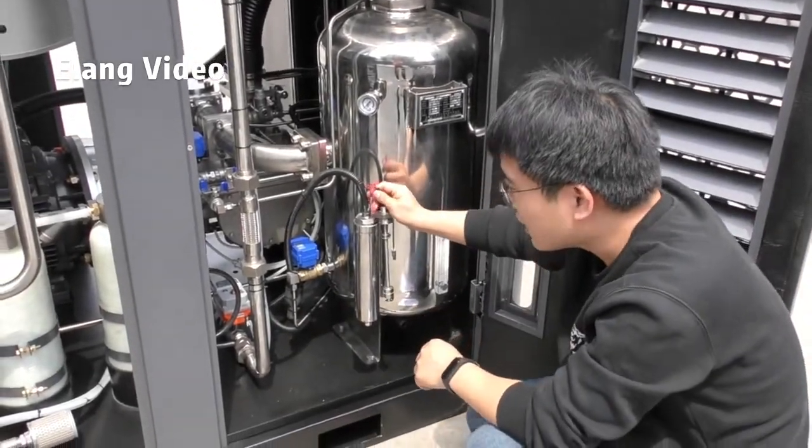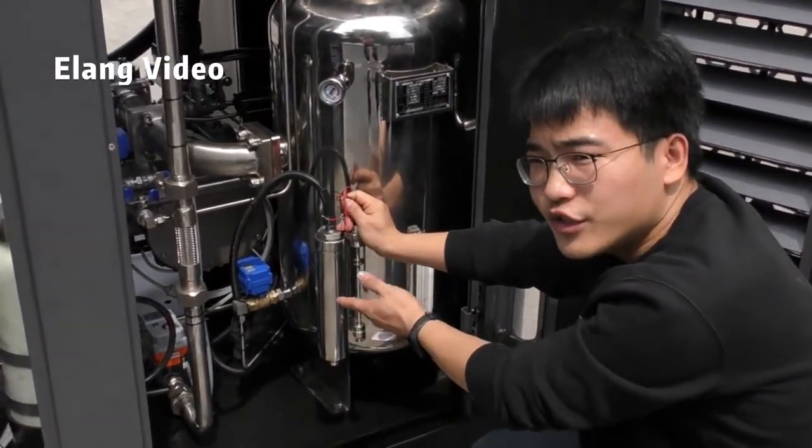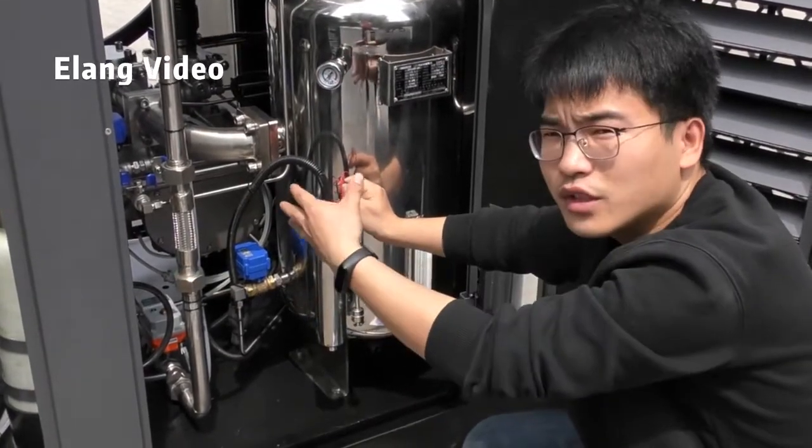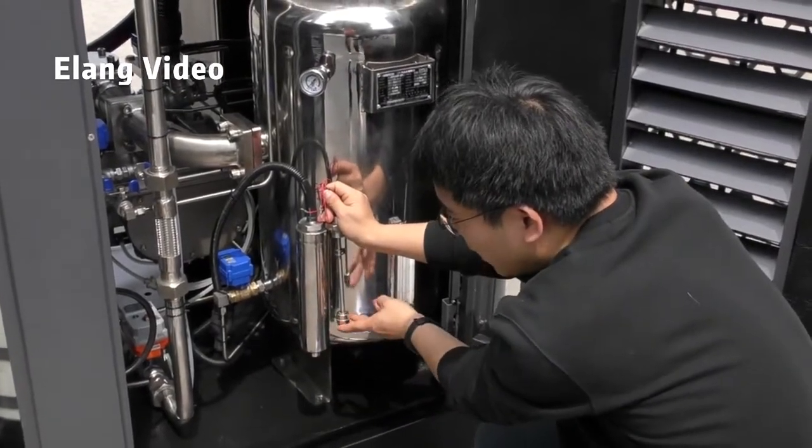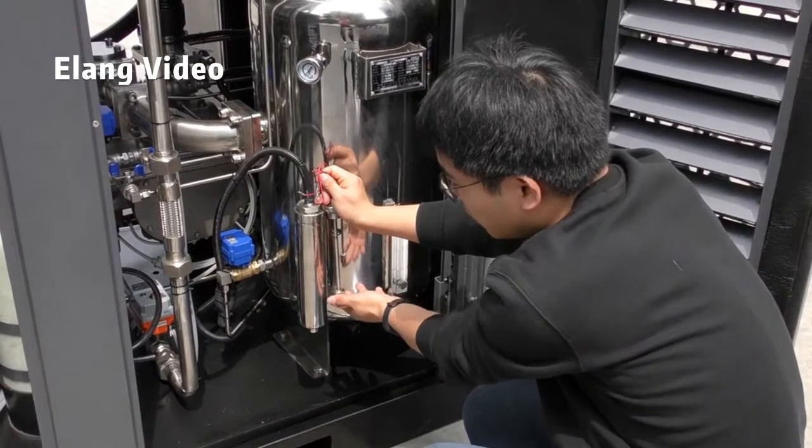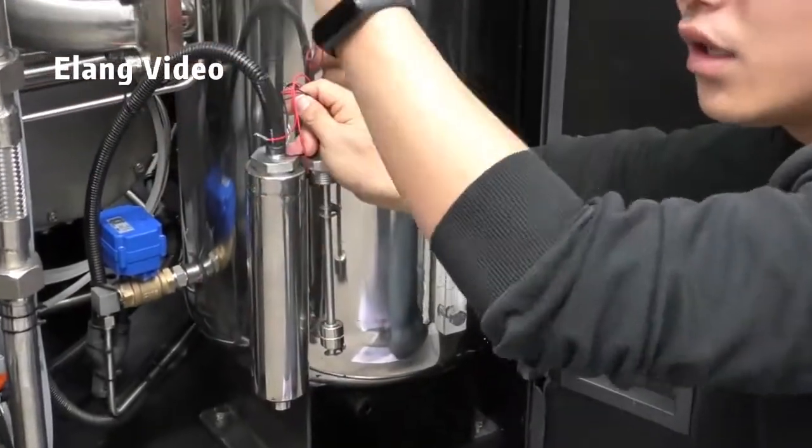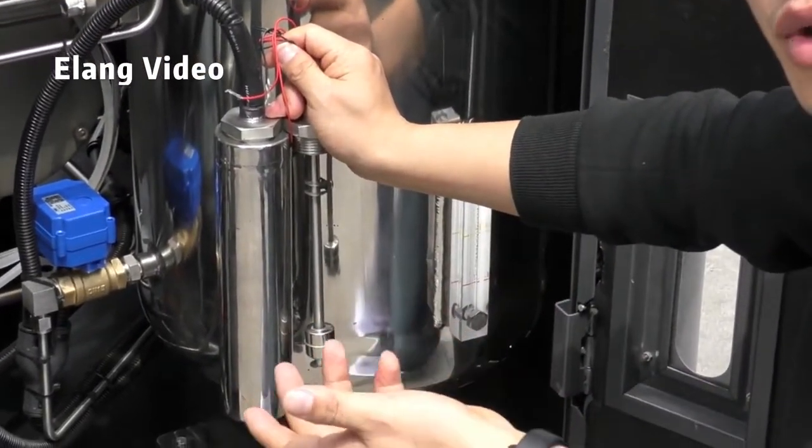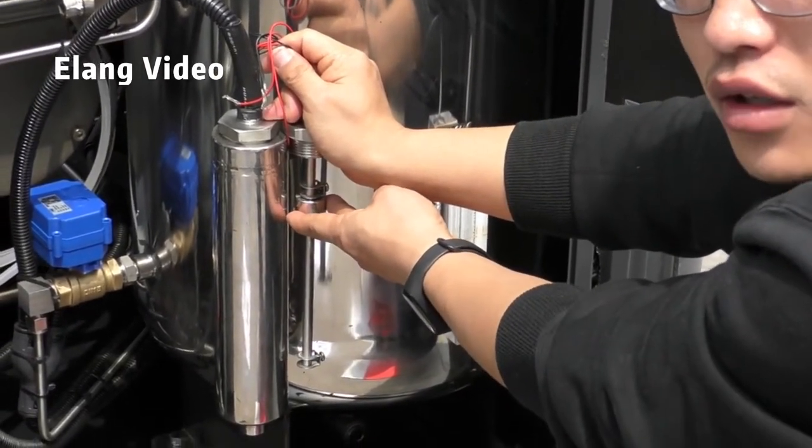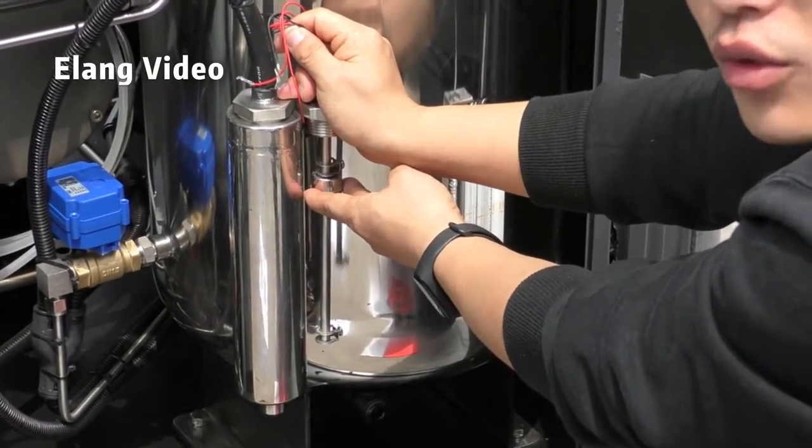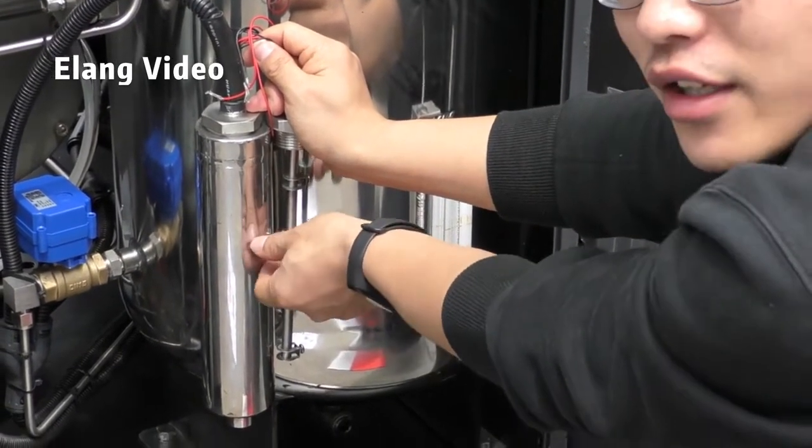This is the water level sensor to ensure all systems have enough water. When the water is too low, this one will come here. So our compressor will add water on top to reach high level, and then add water to come to normal level.